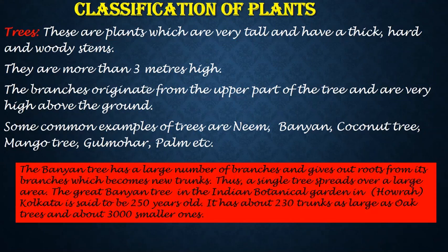It is very interesting to know the banyan tree has a large number of branches and gives out roots from its branches which seem to be new trunks. Actually, these are roots. Thus, a single tree spreads over a large area. The great banyan tree in the Indian Botanical Garden in Haura, Kolkata is said to be 250 years old. It has about 230 trunks as large as oak trees and about 3000 smaller ones. Isn't it amazing students?